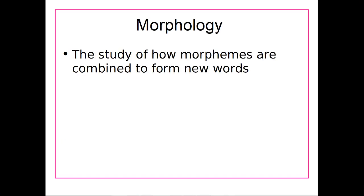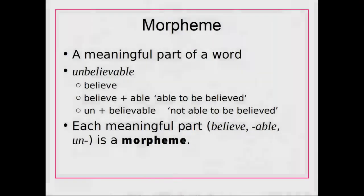Morphology itself, before we get into the other concepts, is basically the study of how morphemes combine to form new words. So you might be wondering: what is a morpheme? A morpheme is basically the smallest part of a word that has meaning. If we can't really break anything down into a smaller part that has meaning, then that is a morpheme.